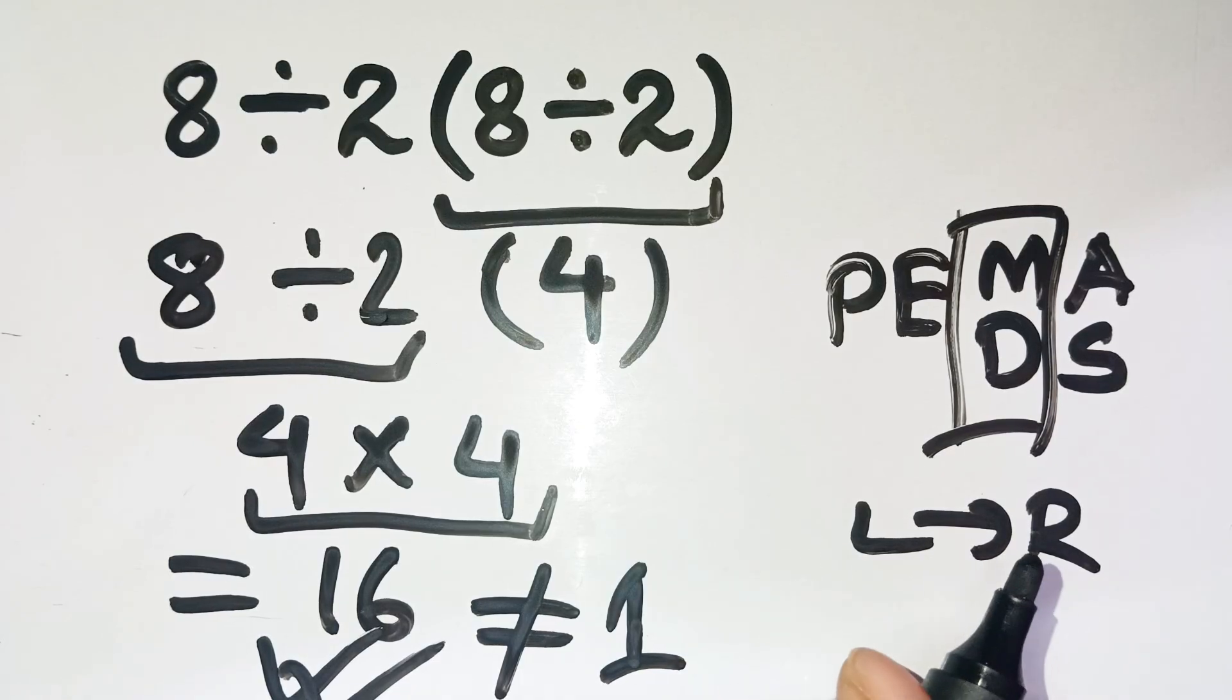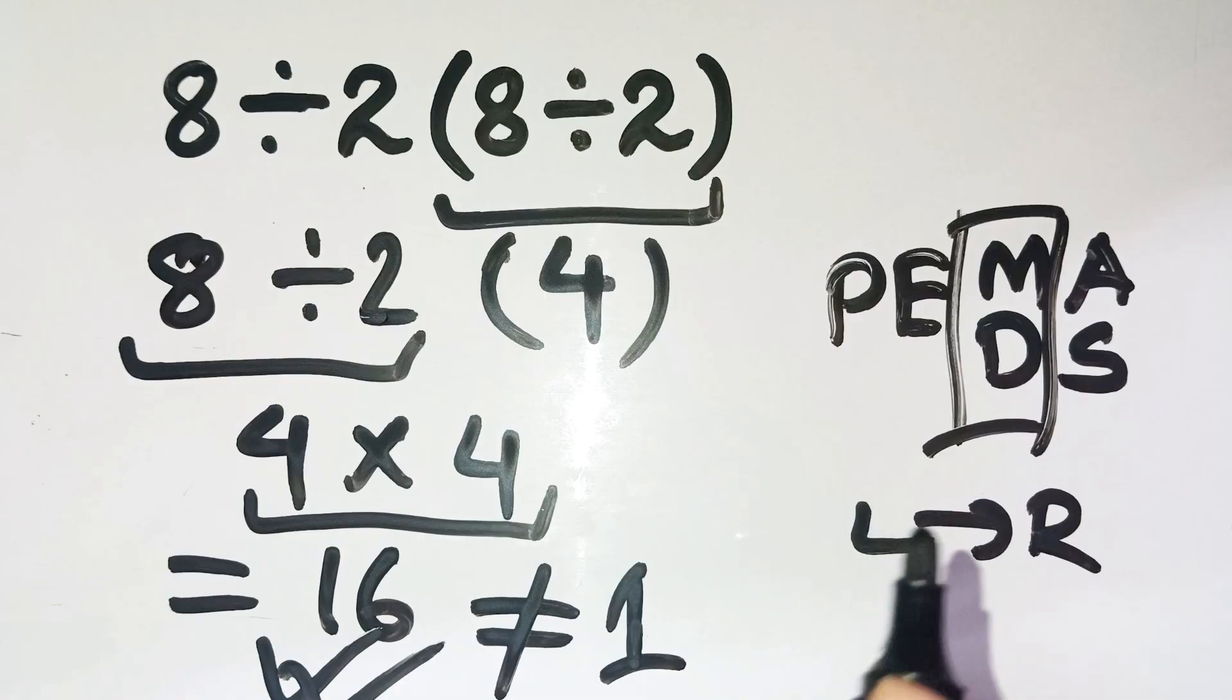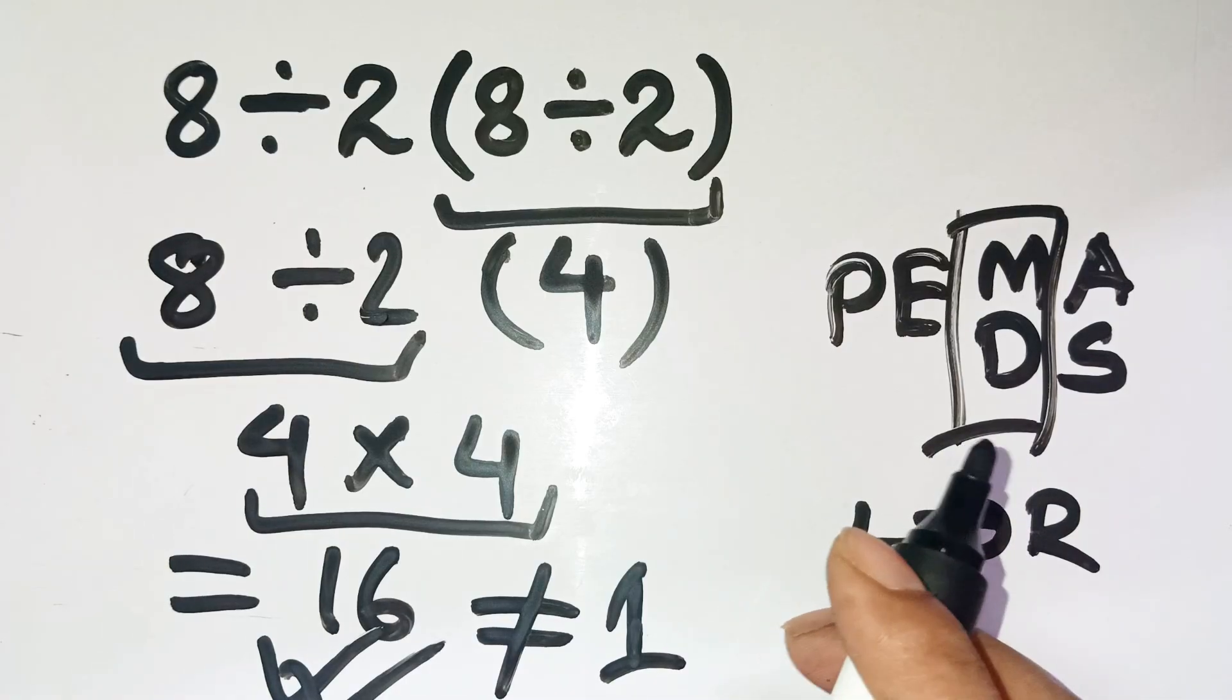But PEMDAS reminds you, after parentheses are simplified, you still go left to right for multiplication and division. A single small step in the wrong order can flip your entire answer.